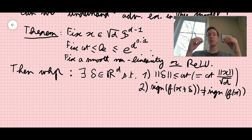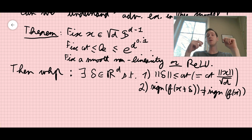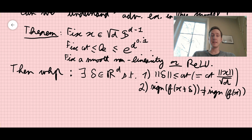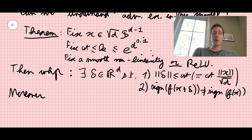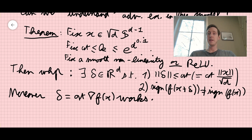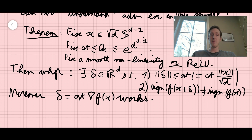This is exactly what we call an adversarial perturbation. f at x has some constant value — maybe 0.7, 1.2, or -1.2 — and you apply a tiny perturbation of order norm(x)/sqrt(d), and you change the sign of the output. Moreover, and this is a key point: delta equals a constant times the gradient of f at x works. Not only do adversarial examples exist, but one step of gradient descent finds them. The constant is either +1 or -1 — moving in the direction or against the gradient, depending on whether f was negative or positive at x.